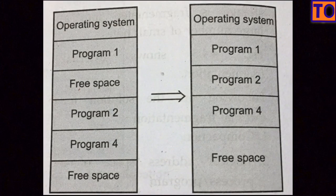This is the basic concept. If you compare compaction to the operating system, external fragmentation has free space for the process. We allocate a free space, and that's why we have free space for the process.